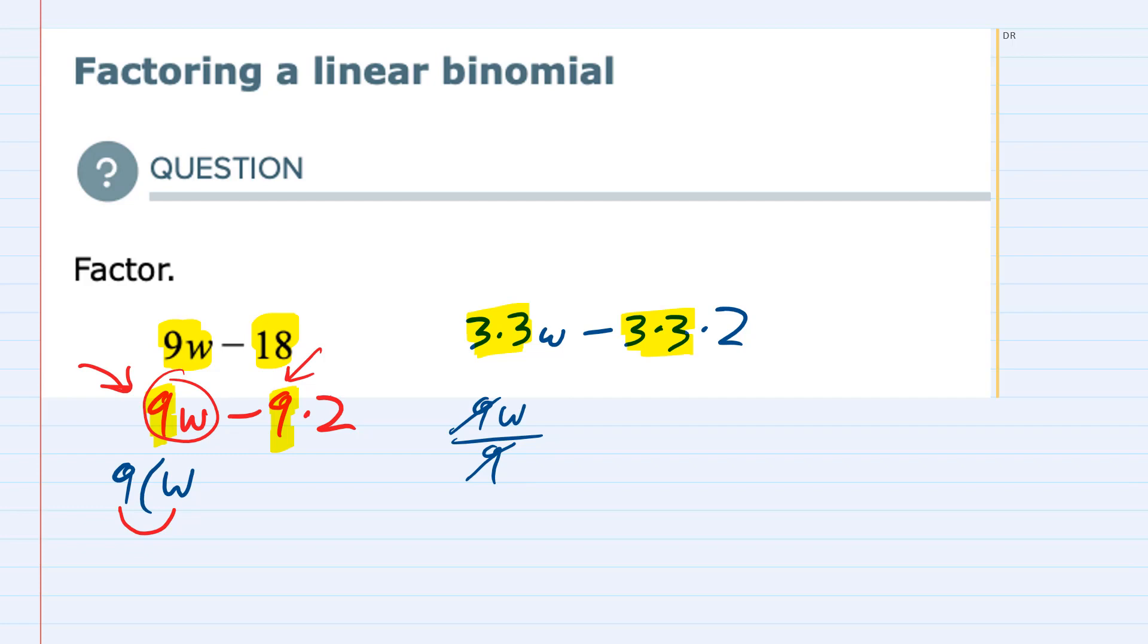For the second part of this expression, it's subtraction. I have 9 times 2 divided by 9. Remember, I'm factoring out the 9, which has the effect of canceling those 9s. I'm left with a 2 in the second part. Again, checking, if I were to distribute that 9, I would have 9 times minus 2, which gives me back the minus 18.